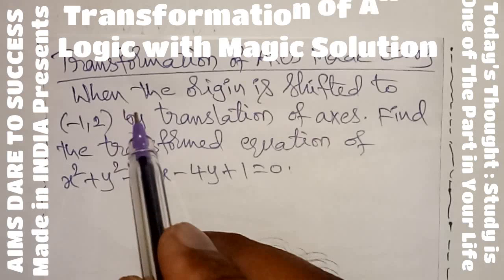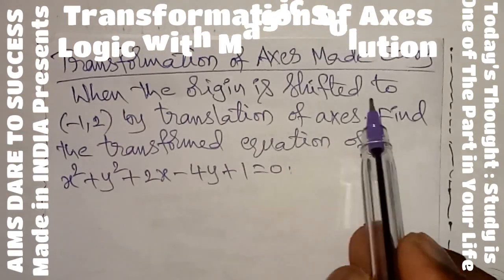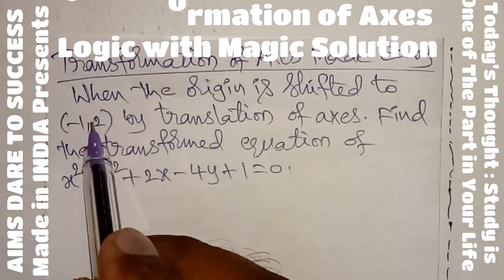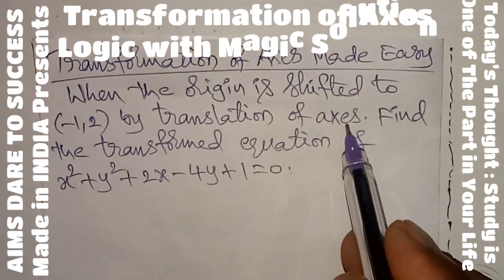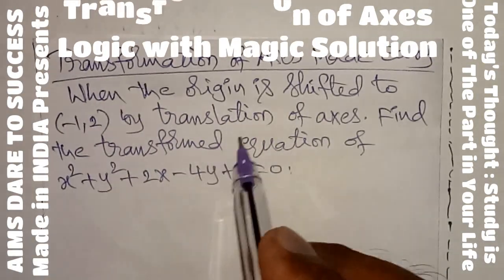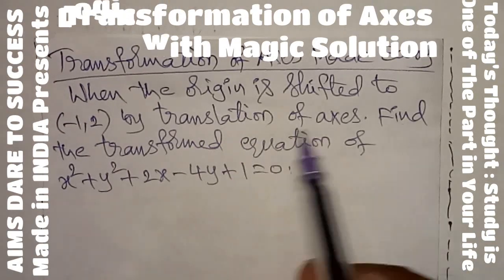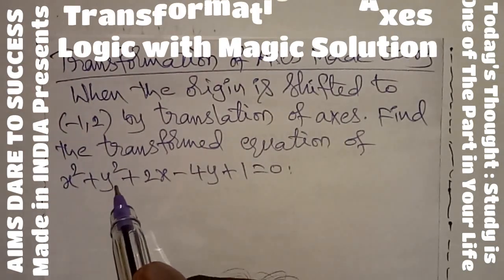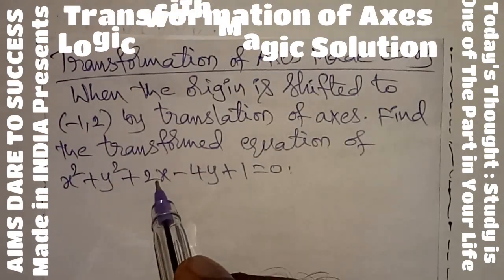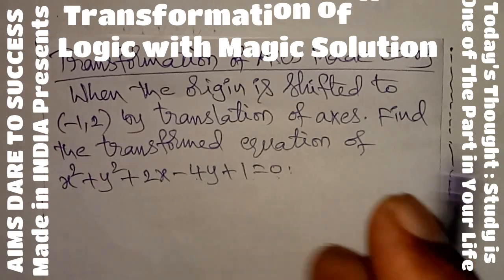Now we want to go directly to the question. When the origin is shifted to the point (-1, 2) by translation of axes — here the x-axis and y-axis are translated — find the transformed equation of x² + y² + 2x − 4y + 1 = 0.